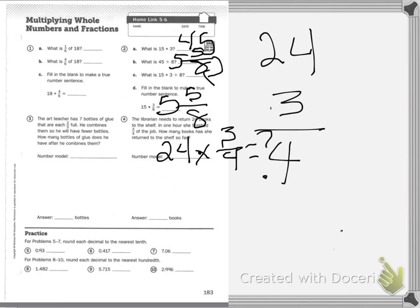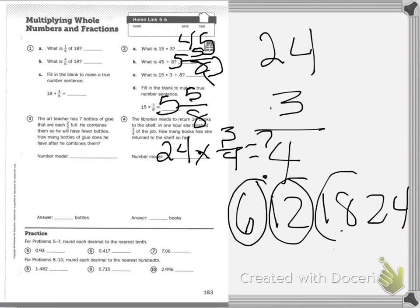So how many times does 4 go into 24? So 1/4 would be 6. So that's if we did our 6, 12, 18, 24. So that would be 1/4, 2/4, 3/4. So the answer is 18 books.